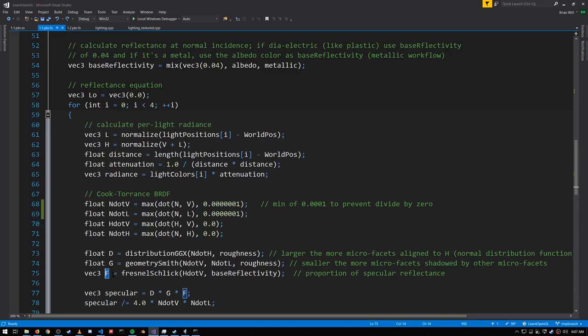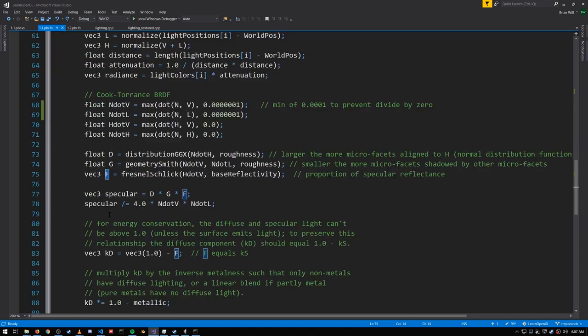In Cook-Torrance, we then get our measure of specular light by multiplying these all together and dividing by four times N dot V, N dot L. Because we're dividing by N dot V, N dot L, that's why they can't be zero here.